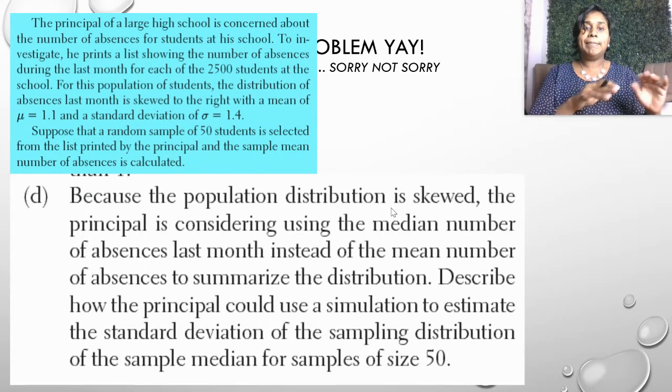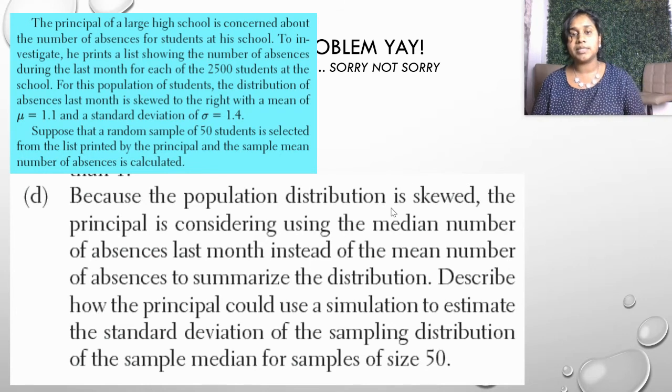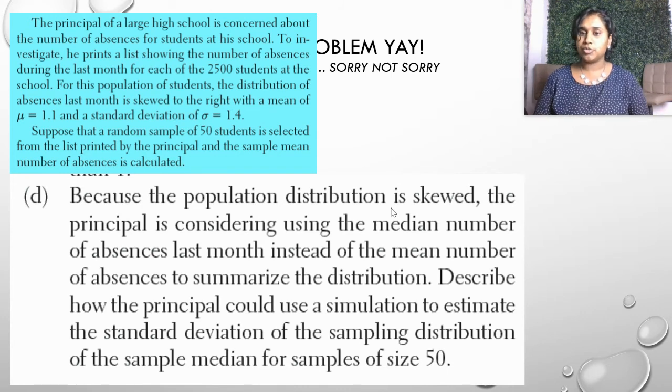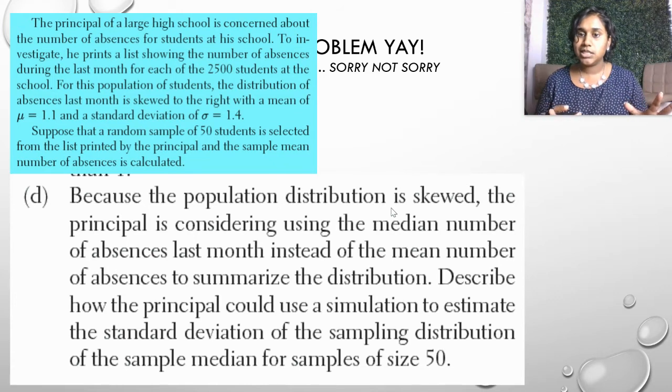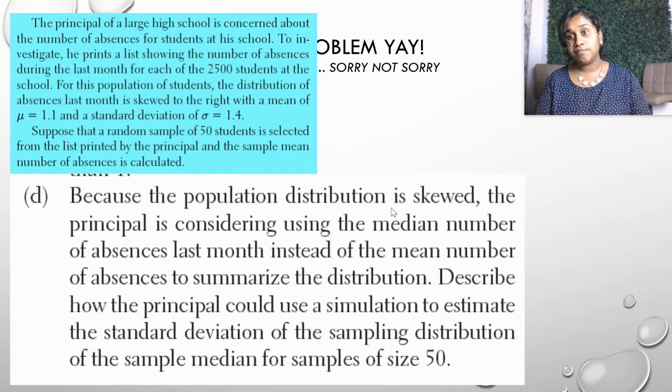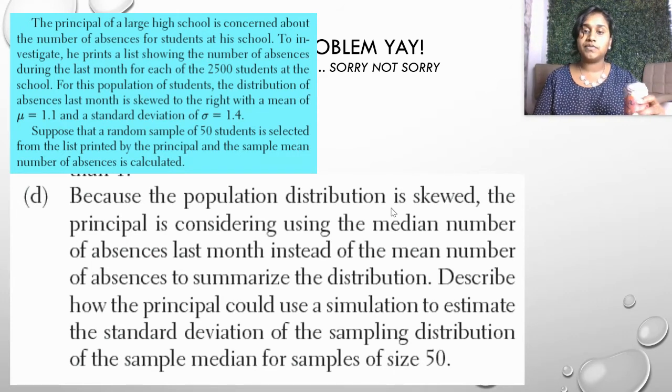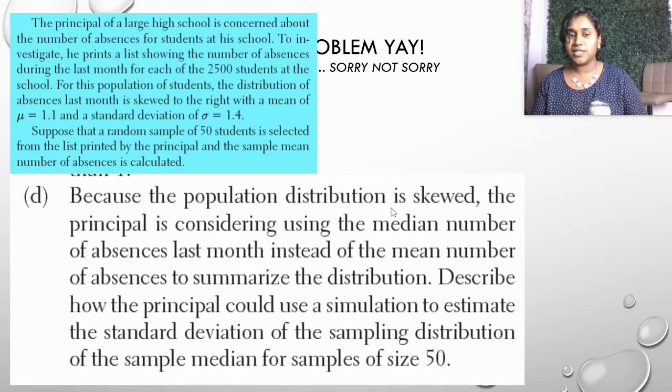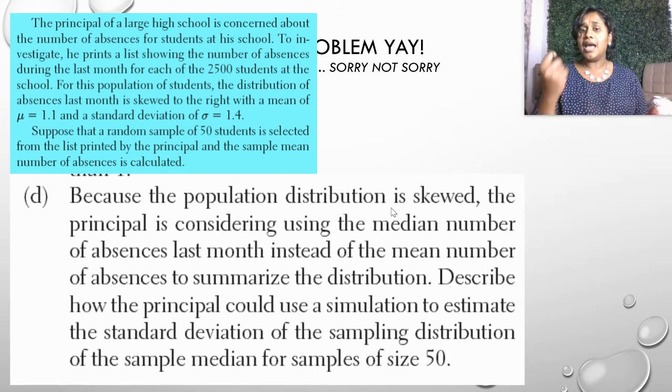And finally, because the population distribution is skewed, the principal is considering using the median number of absences last month instead of the mean. I commend the principal, that's some good thought process. They want to use that to summarize the distribution. Most of us would agree. But you come in and you're like, hey, I'm a statistician. And they want you to describe how the principal could have used a simulation to estimate the standard deviation of the sampling distribution of the sample median for samples of size 50. So really, they're asking you to write in one or two sentences how to set up a simulation.